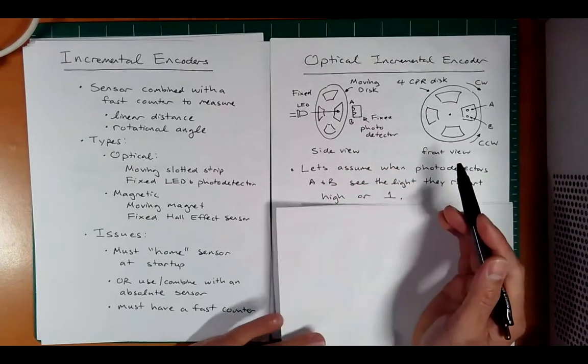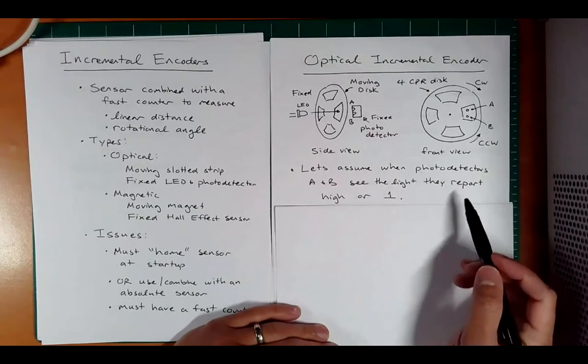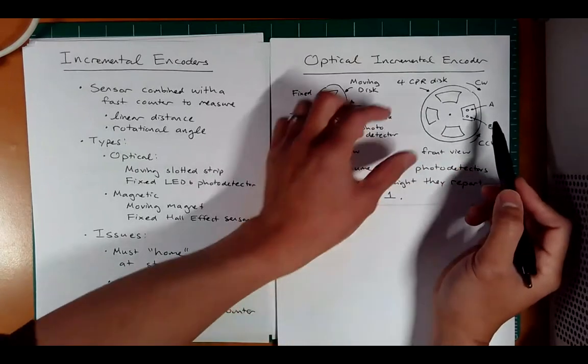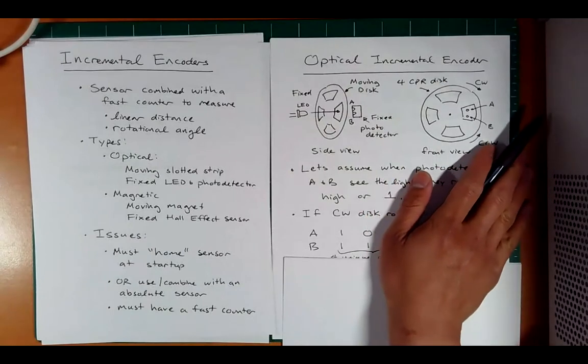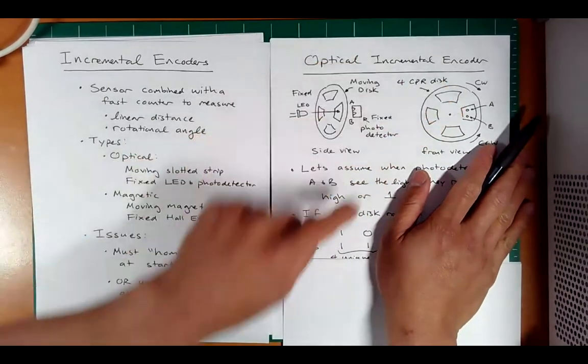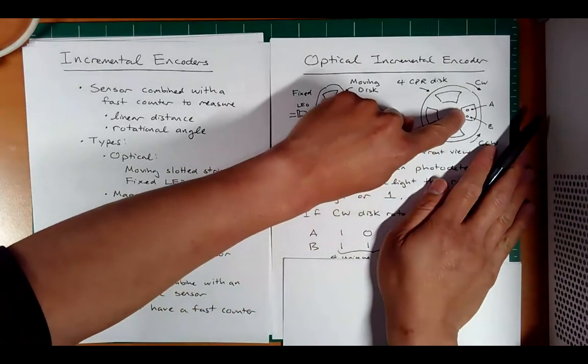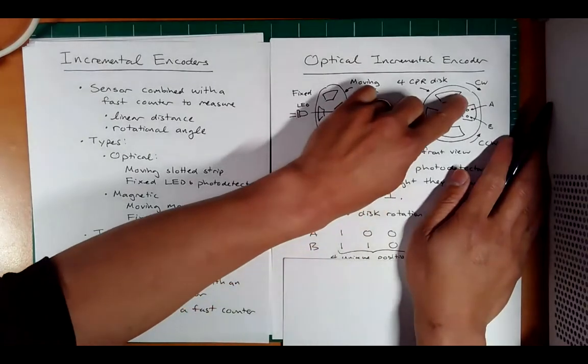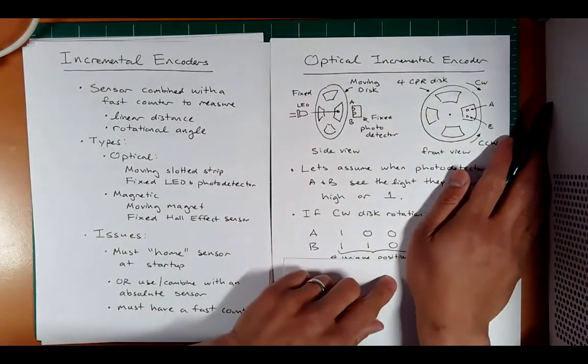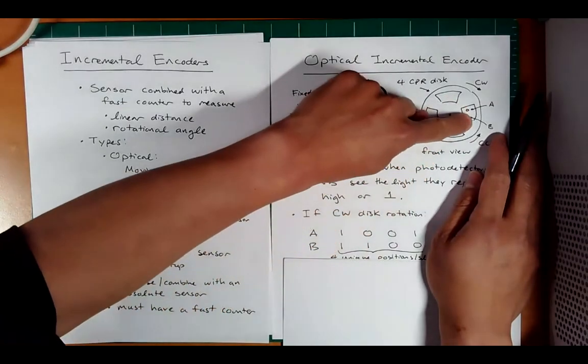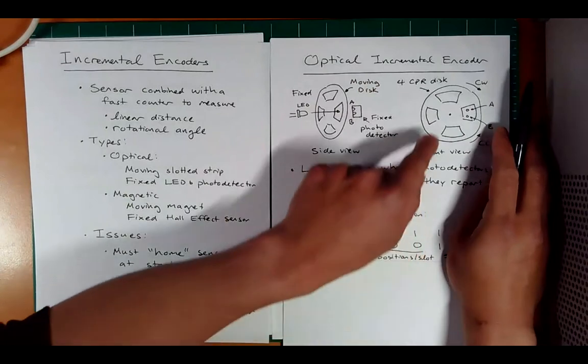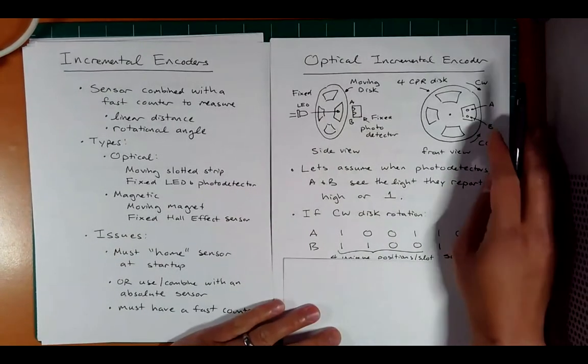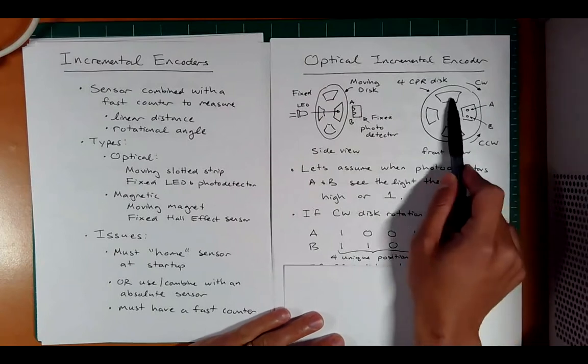So let's assume when the photodetectors A and B see light, they report a high or a one. The logic might be flipped depending on your physical device and what the output is, but let's just say, for this example, C is the light one. So in this case, I'm going to see a one, one, because the light shines through. Now, if I rotate it clockwise, the A is going to get blocked. So one, one, as I rotate it clockwise, the A is going to get blocked while the B will still be on. It'll still see the light.